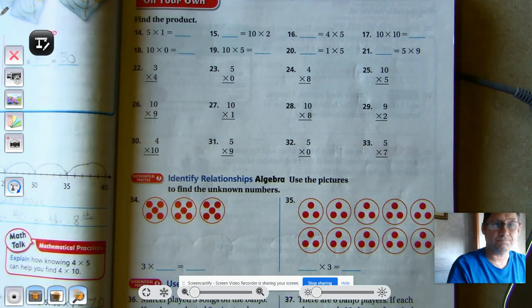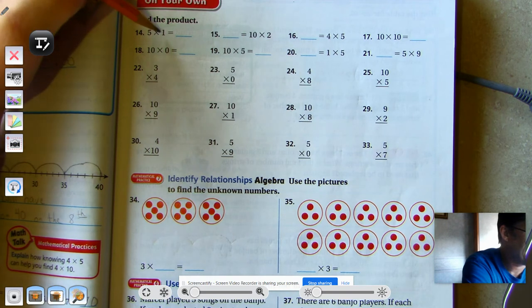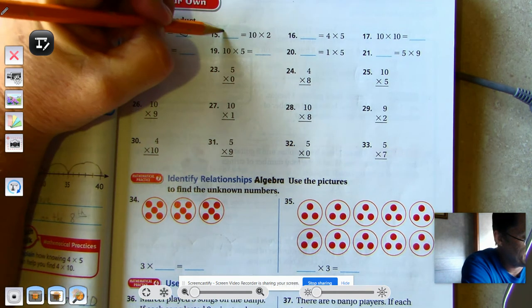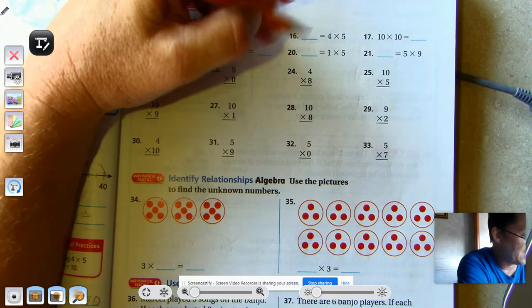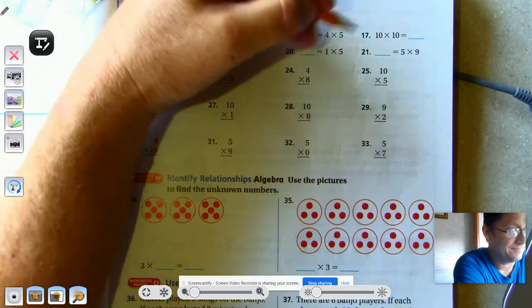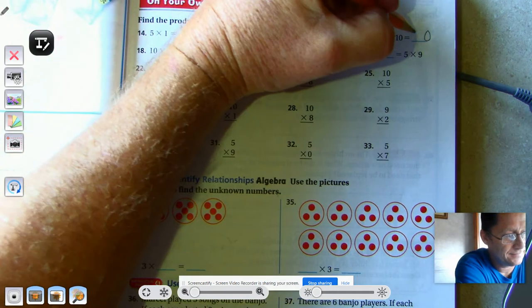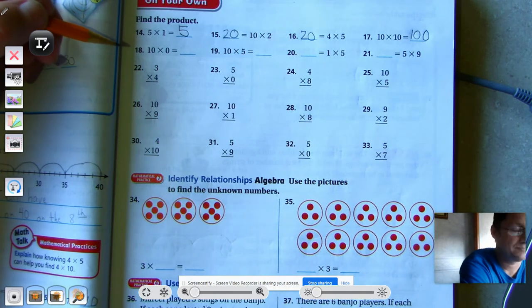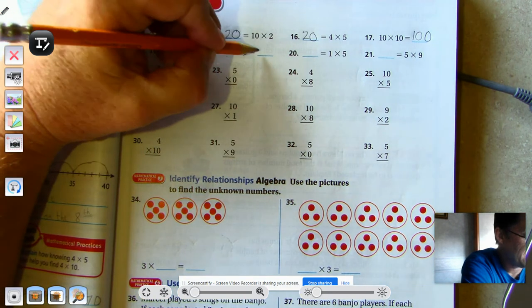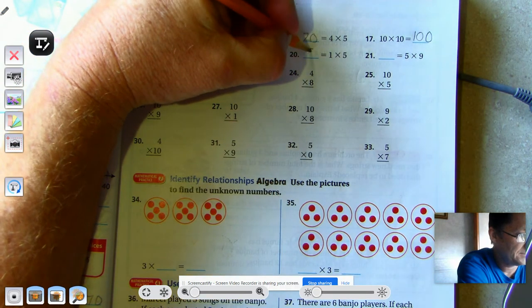All right, page 145, number 14. Identity property of multiplication says any number times 1 is the other number. So 5 times 1 is 5. 10 times 2 is going to be 20. 4 times 5, 20. 10 times 10. Well, again, we know that it's going to end in a 0, and 10 times 1 is 10, so 10 tens is 100. 0 property of multiplication says that that's 0. 10 times 5, 50.